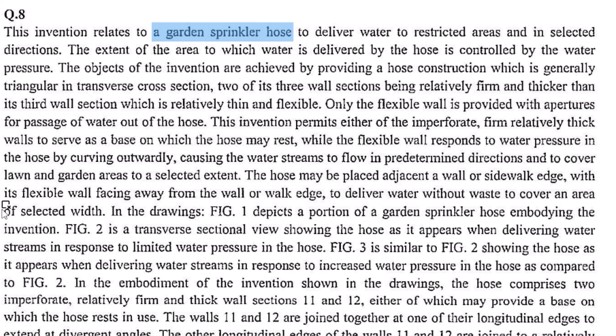Broadly, you can start with an independent claim: a garden sprinkler hose comprising a first wall, a second wall, and a third wall, wherein the third wall is provided with apertures for passage of water out of the hose. But then it doesn't provide any more detail — how is the first wall connected to the second, and how is the second wall connected to the third? Whenever you have mechanical construction kind of inventions, you should be looking for providing the connection details about these parts.